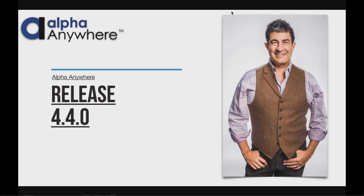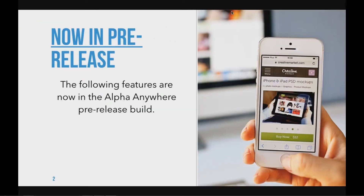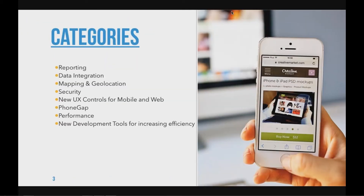You'll notice the last release was 4.3.2. We decided there was so much in this one — so many key, game-changer type features — that we bumped it to 4.4, and it is now available to download and start playing with immediately. The new features span new reporting capabilities, new data integration capabilities, new mapping and geolocation capabilities, security enhancements, new UX capabilities, PhoneGap items, performance improvements, and new development aspects for team development.